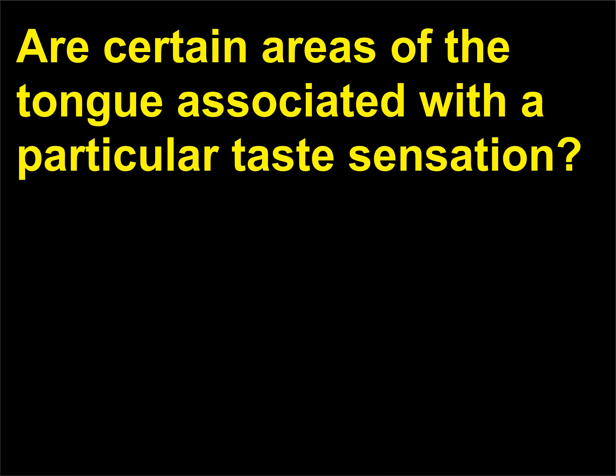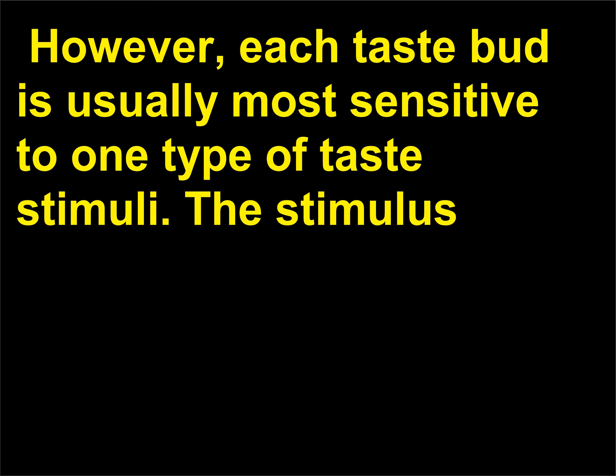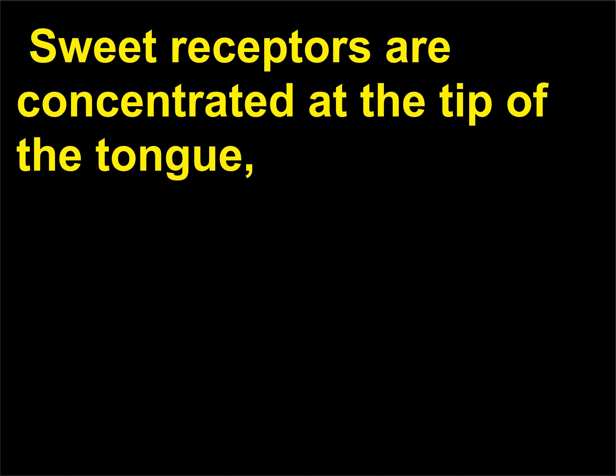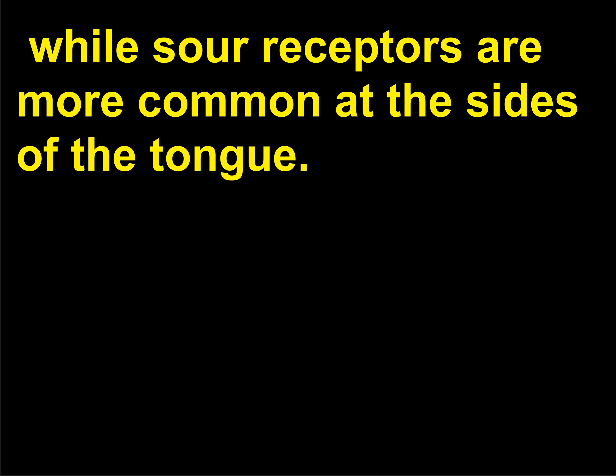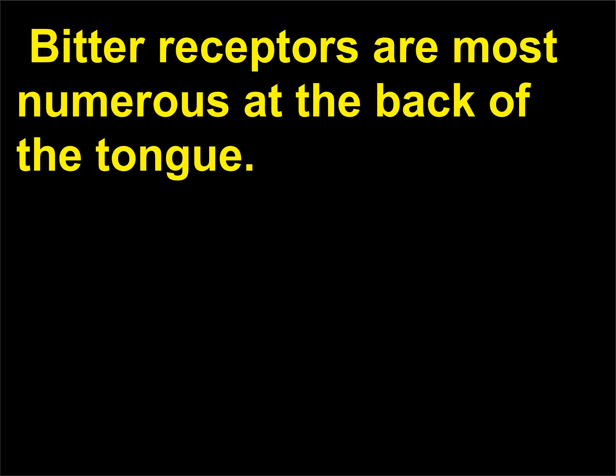Are certain areas of the tongue associated with a particular taste sensation? All taste buds are able to detect each of the four basic taste sensations. However, each taste bud is usually most sensitive to one type of taste stimulus, related to its position on the tongue. Sweet receptors are concentrated at the tip of the tongue, while sour receptors are more common at the sides. Salt receptors occur most frequently at the tip and front edges of the tongue, and bitter receptors are most numerous at the back of the tongue.